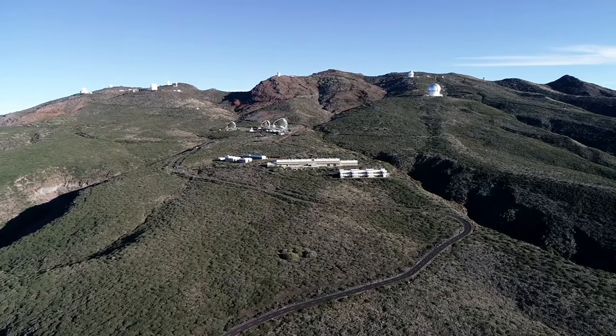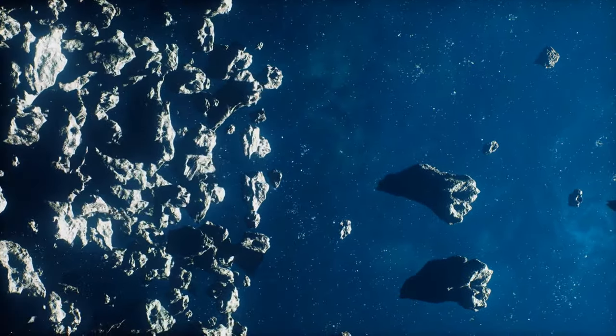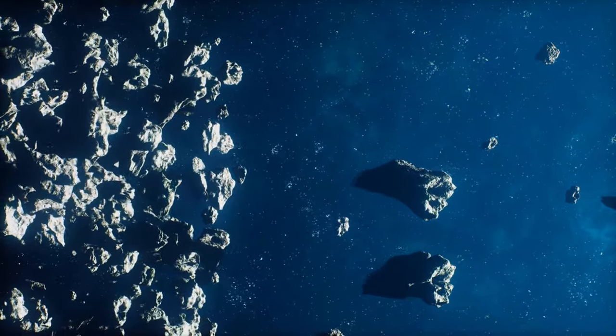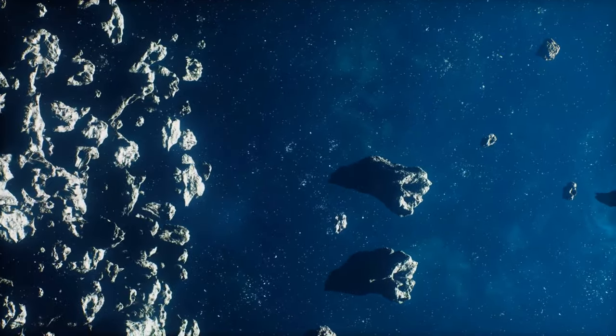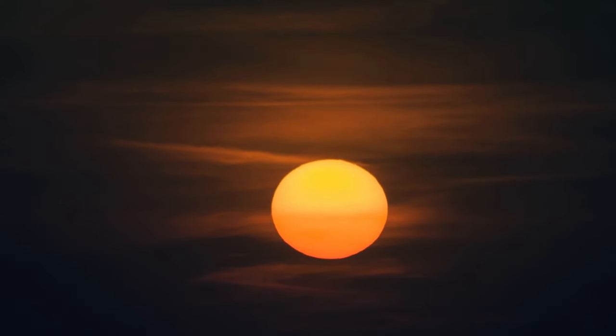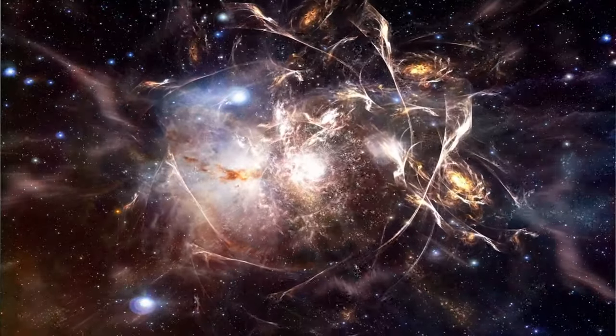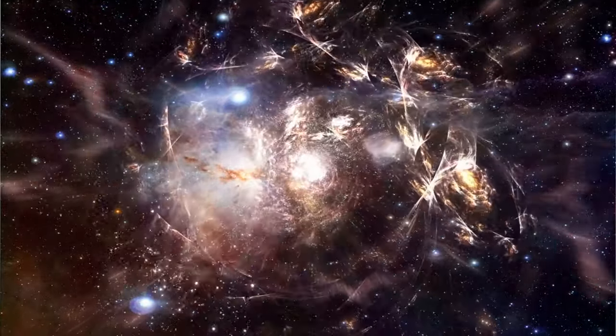The constellation Camelopardalis hosts an astronomical marvel known as UGC 9555, a colossal island of stars positioned at a distance of 820 million light-years from Earth. This sprawling cosmic entity spans just over 8 million light-years in diameter, with its mass posing a challenge to estimate accurately.